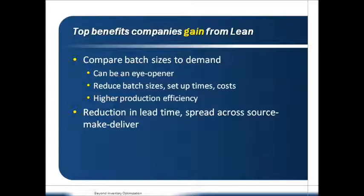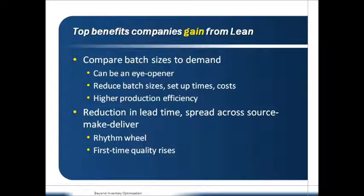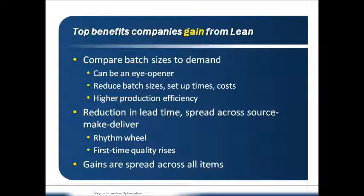Things speed up quite dramatically. The usual frozen horizons — in consumer goods being 28 days or 14 days — now become the rhythm wheel, which is four days or one week. And one of the side benefits along the lean mentality is that first-time quality of products goes up significantly. Bottom line is you are seeing significant reductions in inventory, high availability, and significant reductions in total supply chain costs. And these gains are spread not only to the items you are pulling, but across all items.